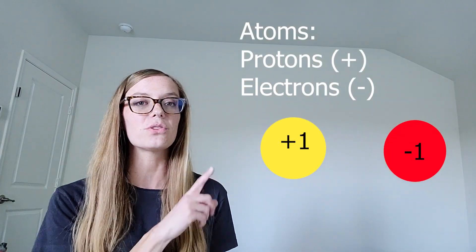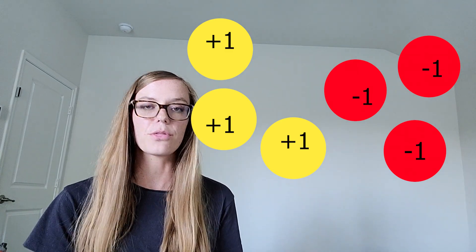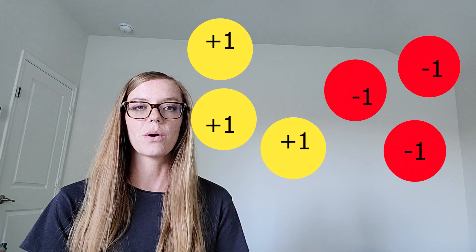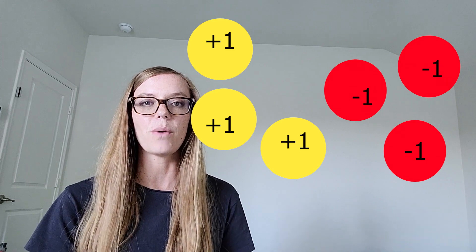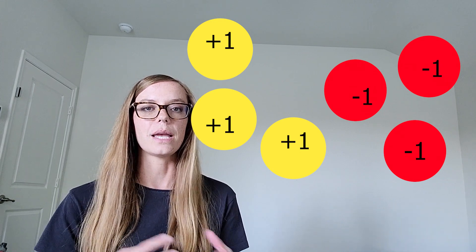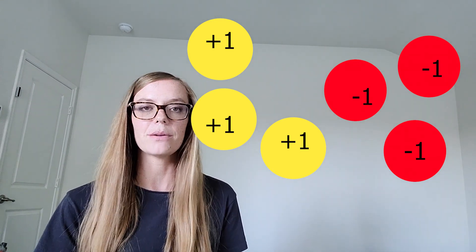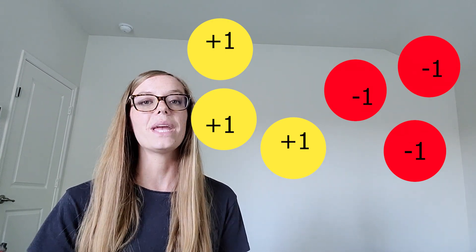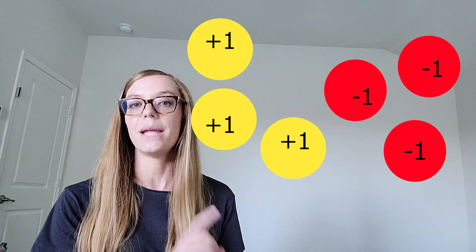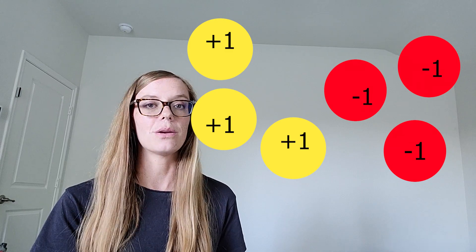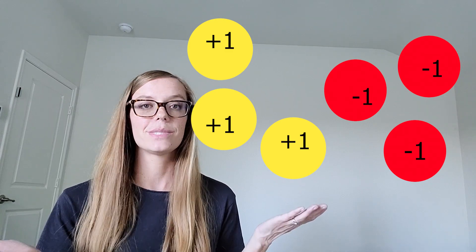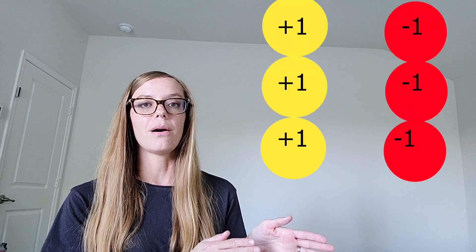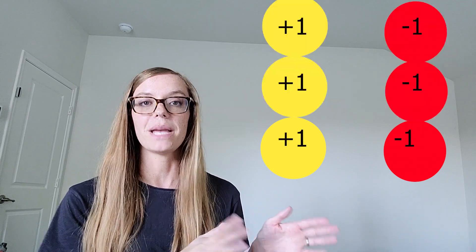Here's our first example. We have three protons and three electrons. A really easy way to think about this and wrap our brain around it is to match them up. If we have a positive one and a negative one, that just equals zero. So let's line these up so that they are making matches.